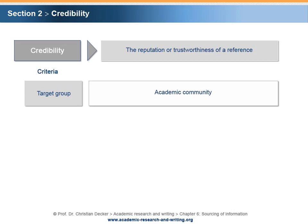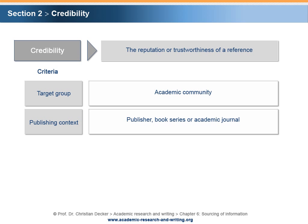Accordingly, publications such as daily newspapers, news magazines, or popular scientific literature miss the rigor and intersubjective comprehensibility of academic references. Publishing Context: The reputation of the publisher and/or the standing of the book series or academic journal where a reference has been published may help to identify the quality of a reference.